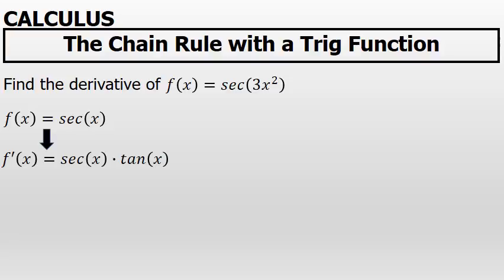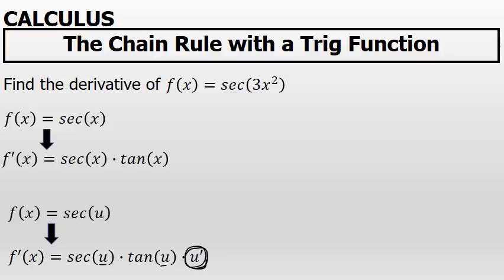But a more specific definition of the derivative of f of x equals the secant of x is described with the chain rule. If f of x equals the secant of u, then the derivative is the secant of u times the tangent of u times the derivative of u.